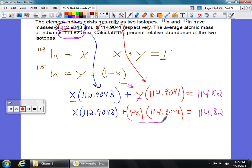So we're going to distribute right here. And let me just switch my colors to all black, and we're going to go to this one, which is going to give me 112.9043x plus, what are we going to get over here? This is going to be 114.9041 minus 114.9041x is equal to 114.82. What you're going to do is you're going to combine like terms. We have x's here and x's here. We're going to bring this constant right here to the other side by subtracting from both. And when you do your algebra, you should wind up with your x equaling 0.042. That's what you're going to get.